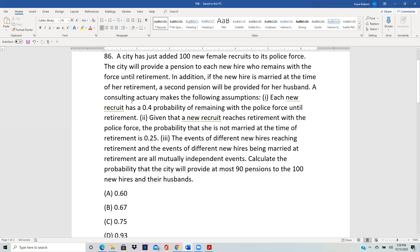A consulting actuary makes the following assumptions: Each new recruit has a 0.4 probability of remaining with the police force until retirement. Given that a new recruit reaches retirement with the police force, the probability that she is not married at the time of retirement is 0.25. The events of different new hires reaching retirement and the events of different new hires being married at retirement are independent. Calculate the probability that the city will provide at most 90 pensions to the 100 new hires and their husbands.